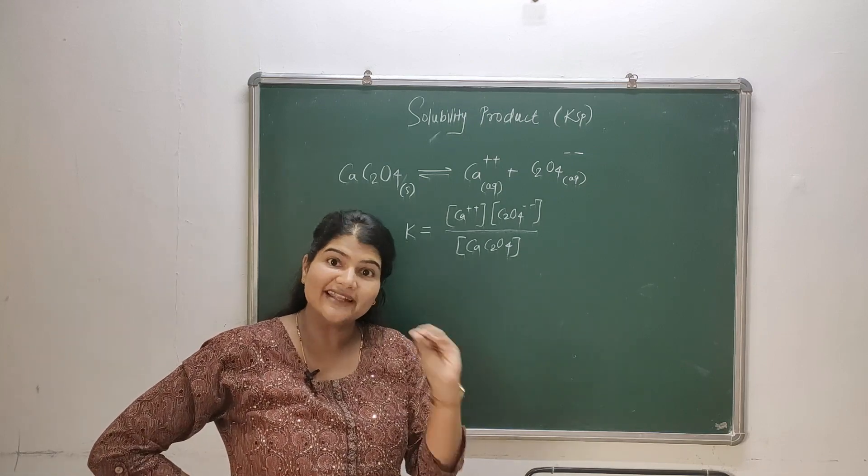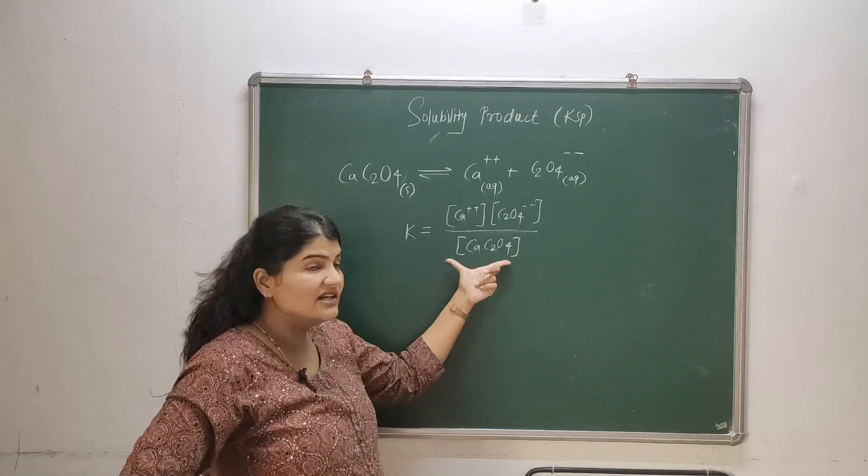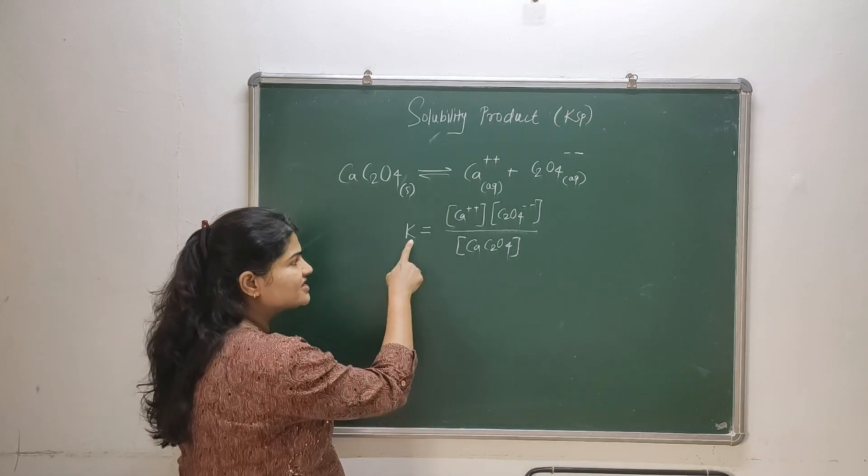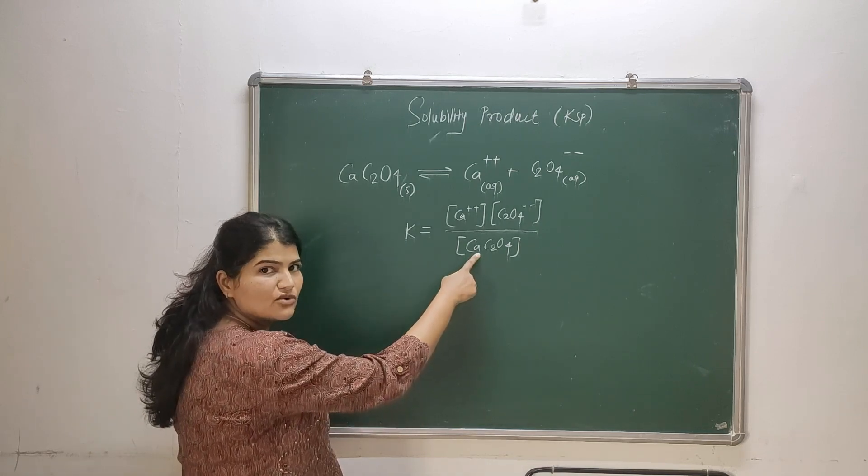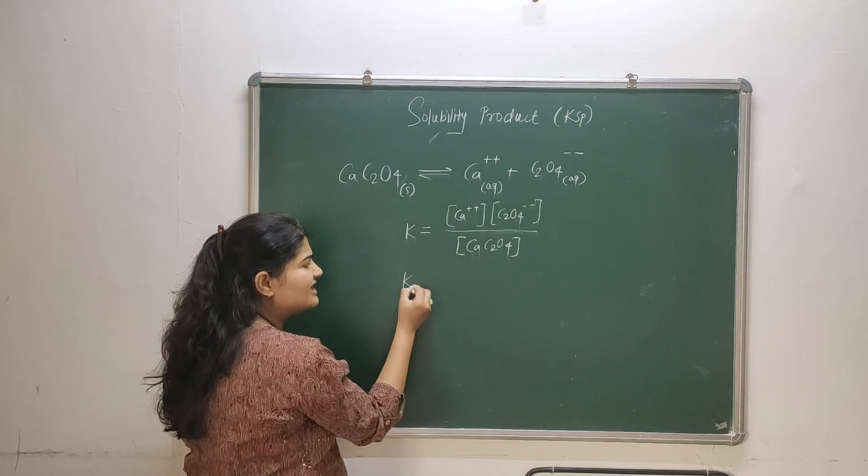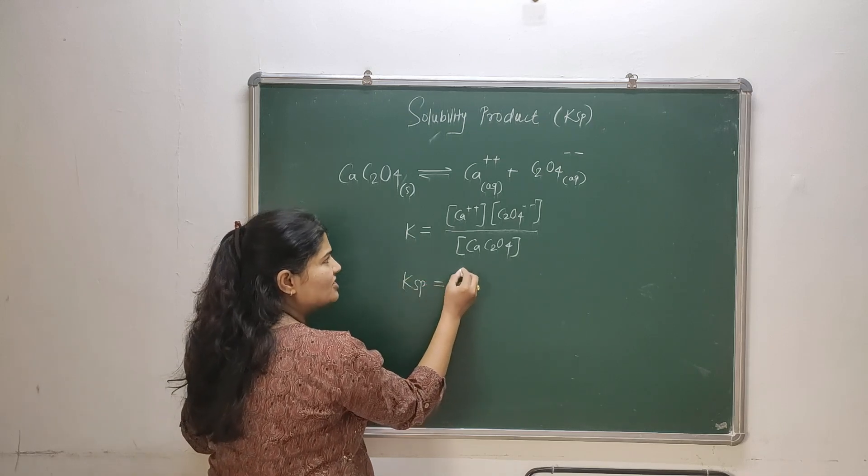Now as we know that at that saturation point and at the particular temperature, the concentration of undissolved solid will be constant. This is a constant. If this concentration is also a constant, if I multiply both of them it will give me another constant.